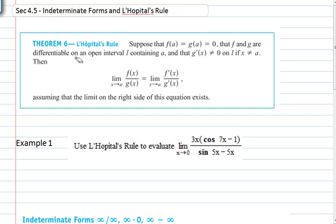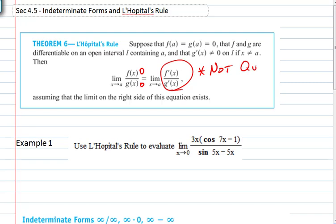If f and g are differentiable on an open interval and the derivative of g is not zero, then the limit of the ratio — where these functions are 0 — if you end up with 0 over 0, that's going to be equal to the limit of the derivative of the numerator over the derivative of the denominator. Be careful: this is not the quotient rule.